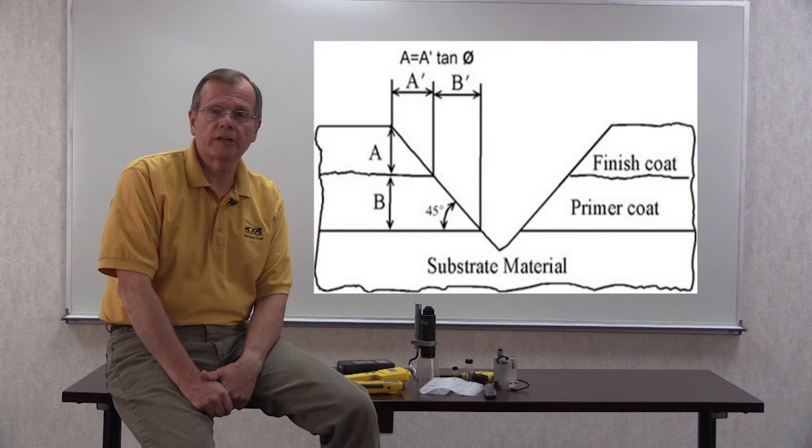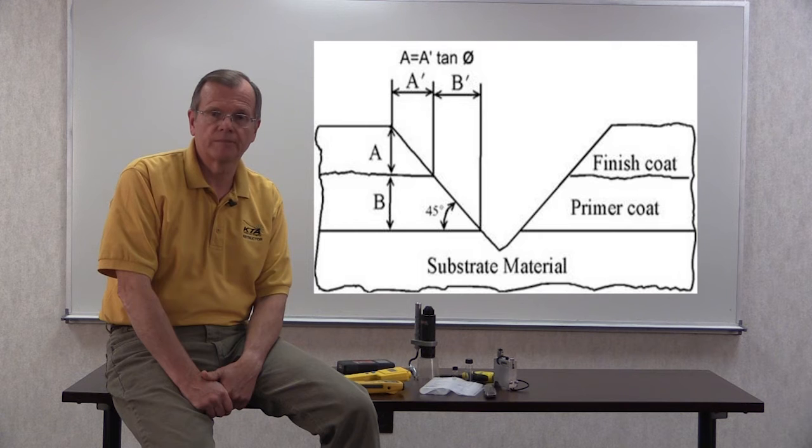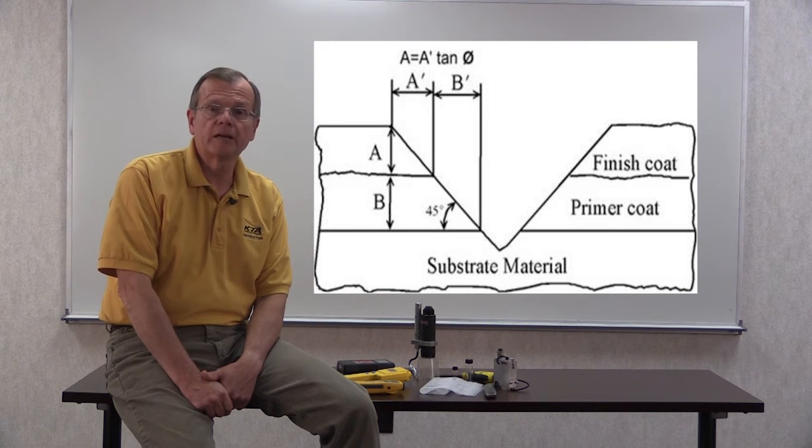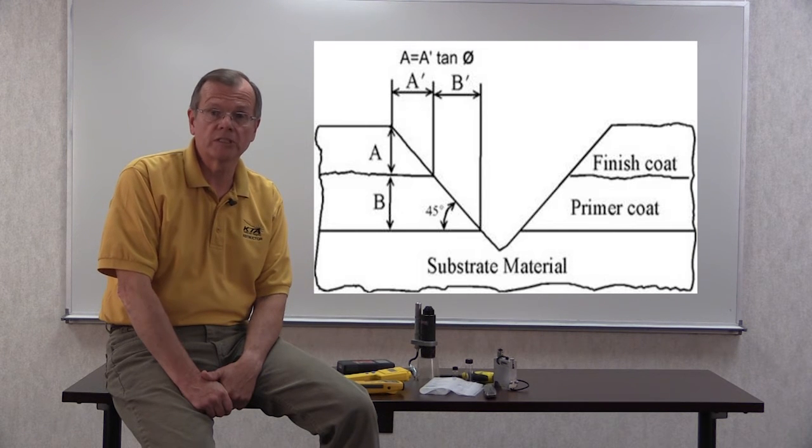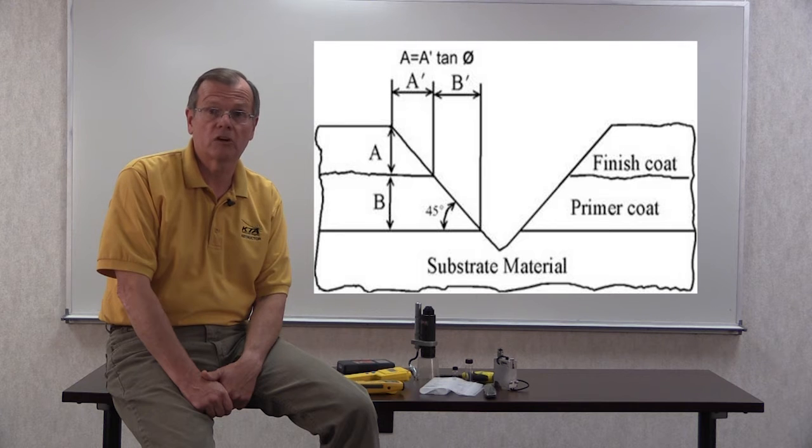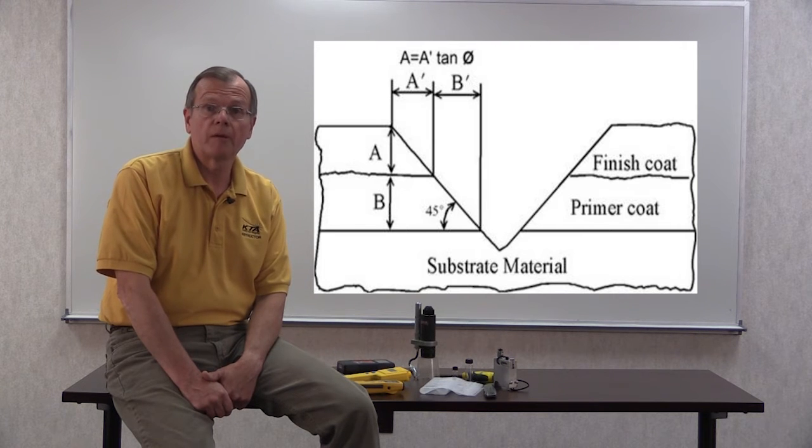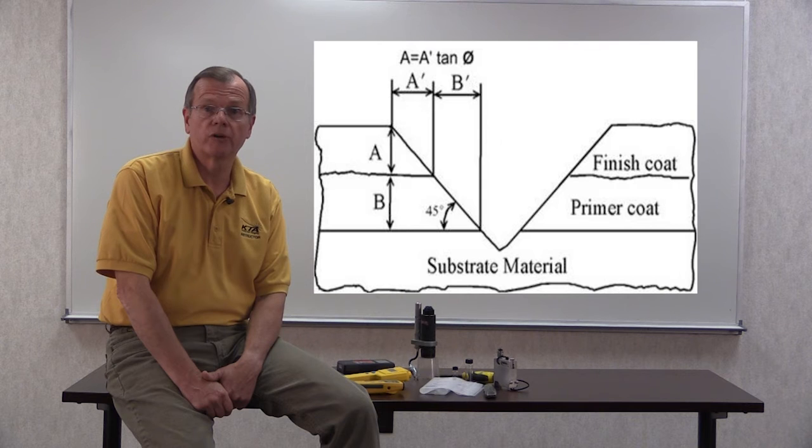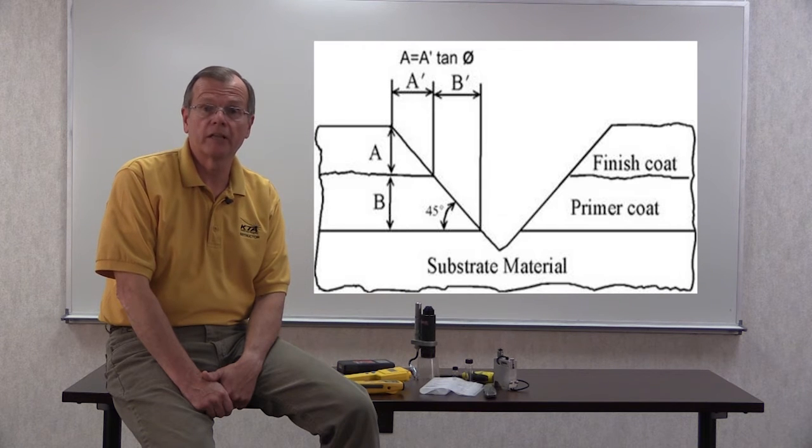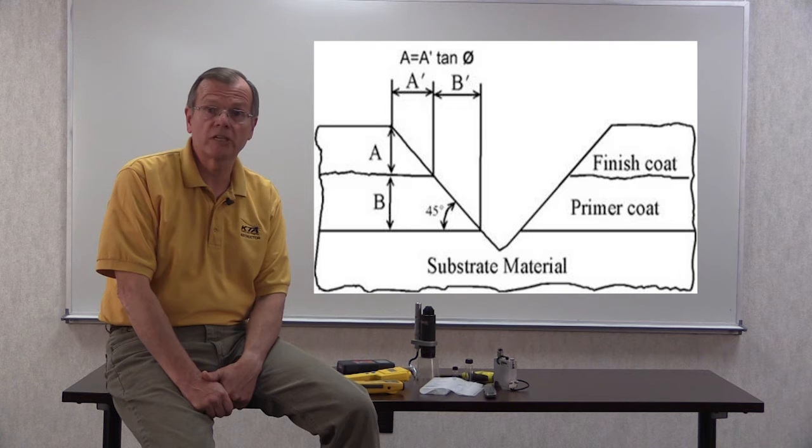The TUC gauge measures coating thickness using basic trigonometry. That is, by cutting a precision V groove into the coating system using one of the tungsten carbide cutting tips, a right triangle is created. The angles of the right triangle are known. So by measuring the length of one leg of the triangle, you can calculate the length of the other, which in this case represents the thickness of the coating layer.